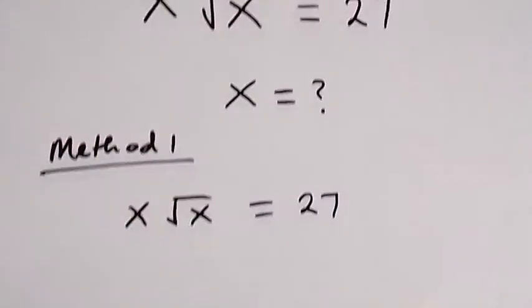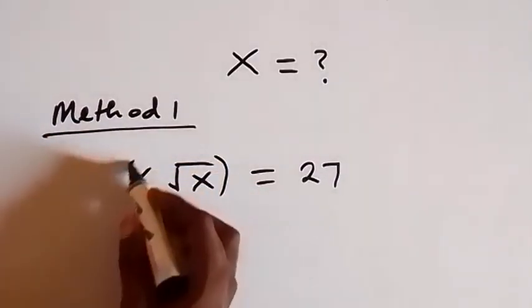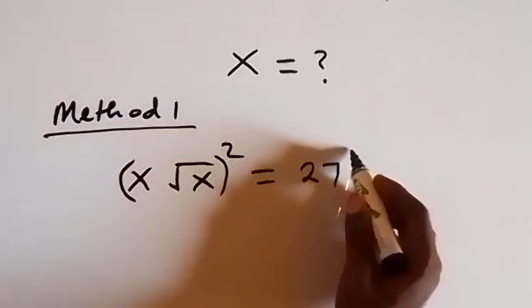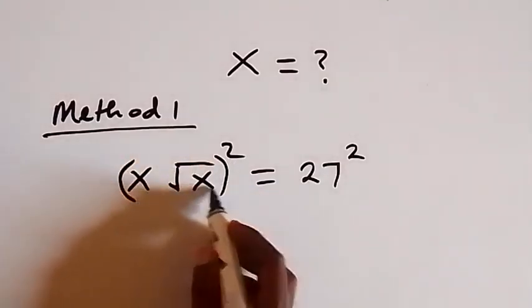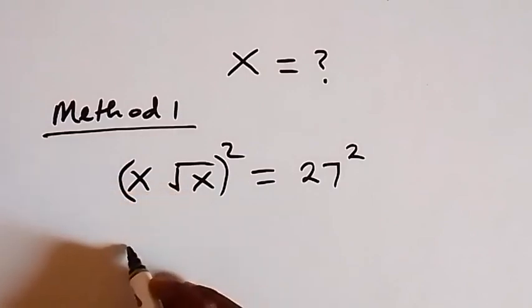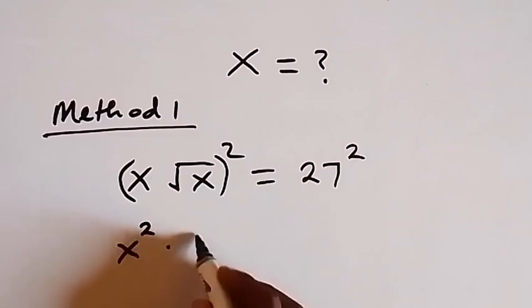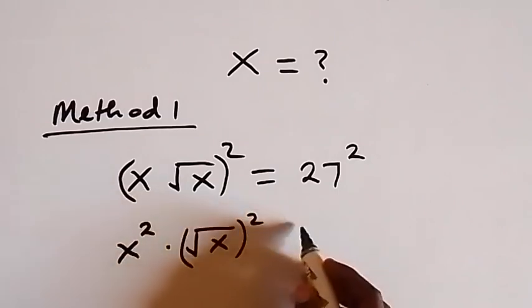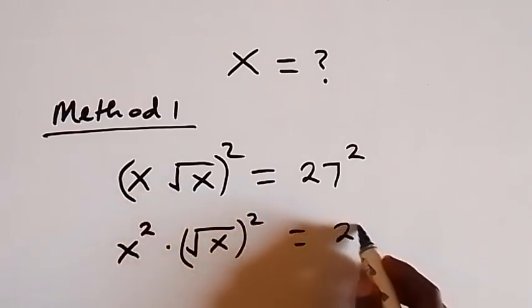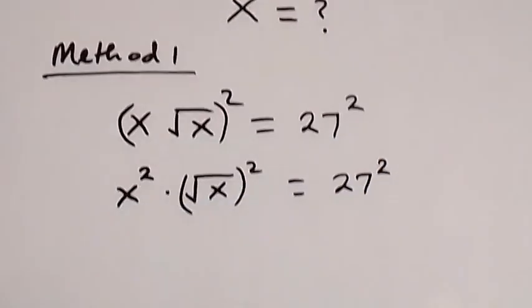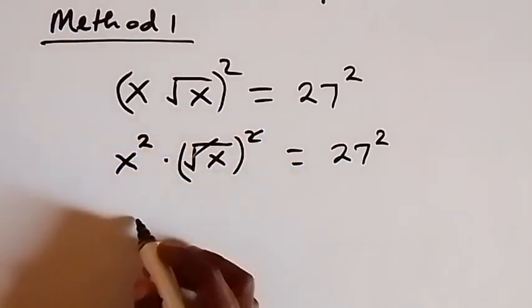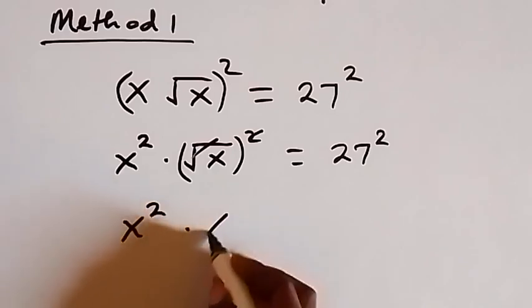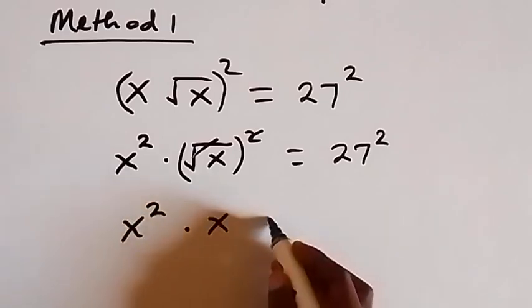Let's square both sides. The square on this side will affect these two terms. So we have x squared multiplied by root x squared, which equals 27 squared. In the next step, square will cancel square root. So we are left with x squared times x.